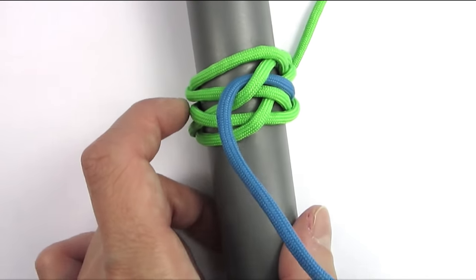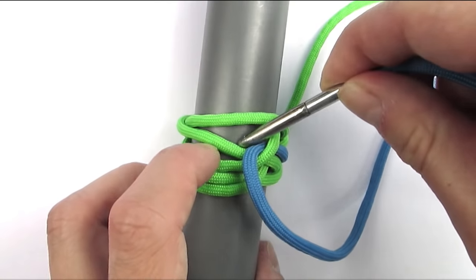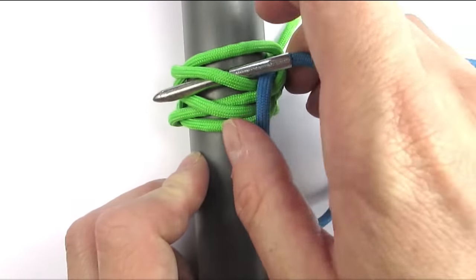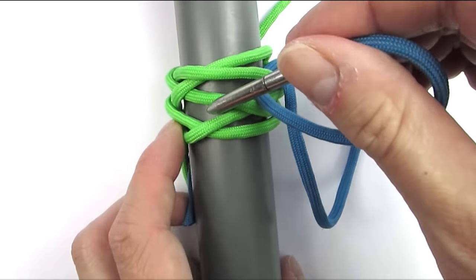We're not going to cross the top bite but instead we're going to go under 1, then over 1 and under 1.